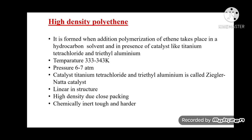High density polyethylene (HDPE) is formed by addition polymerization of ethene in a hydrocarbon solvent in the presence of catalysts like titanium tetrachloride (TiCl₄) and triethylaluminum [Al(C₂H₅)₃] at a temperature of 333 to 343 K and a pressure of 6 to 7 atm. This catalyst combination is called the Ziegler-Natta catalyst. HDPE is linear in structure, high density due to close packing, chemically inert, tough, and harder than LDPE.